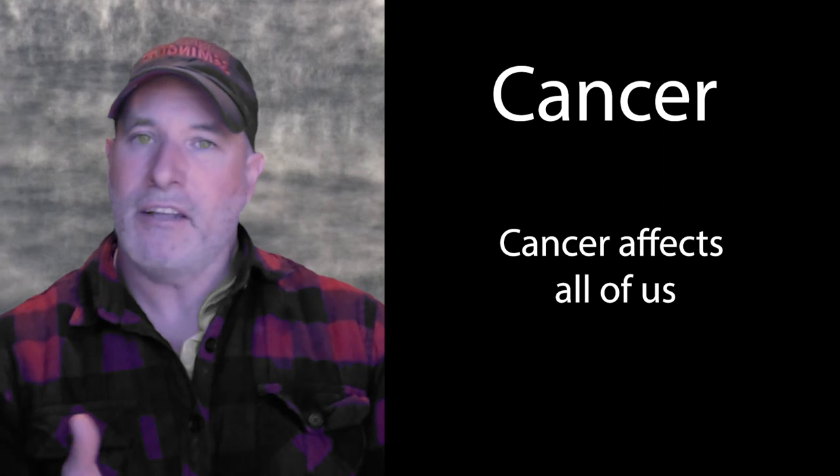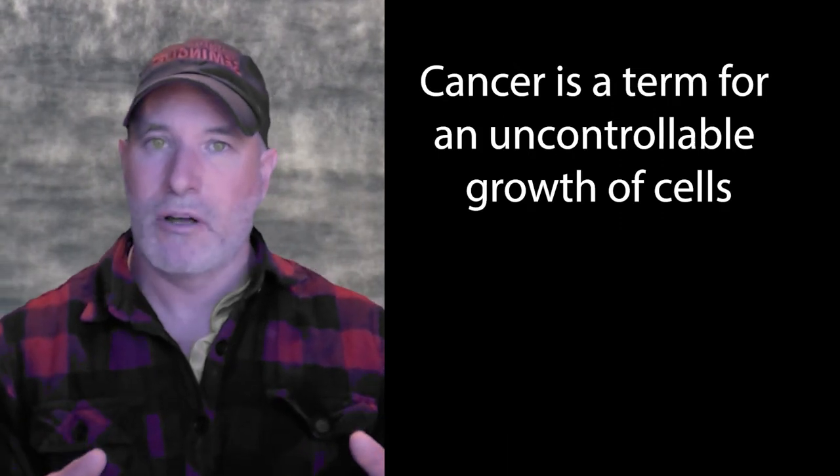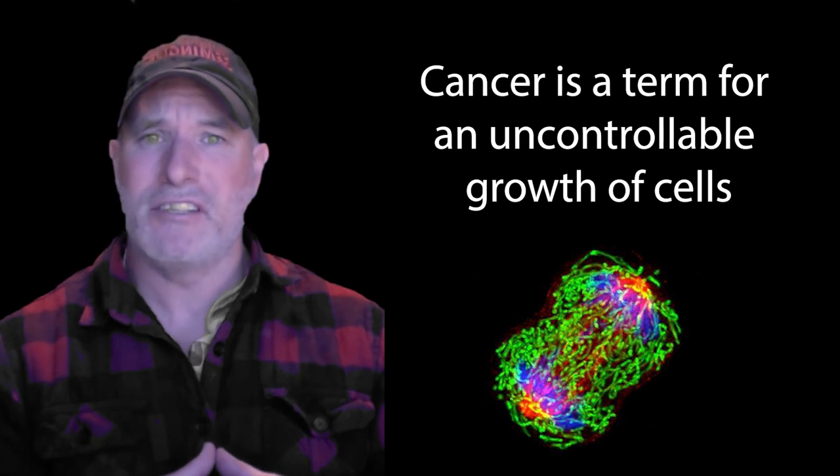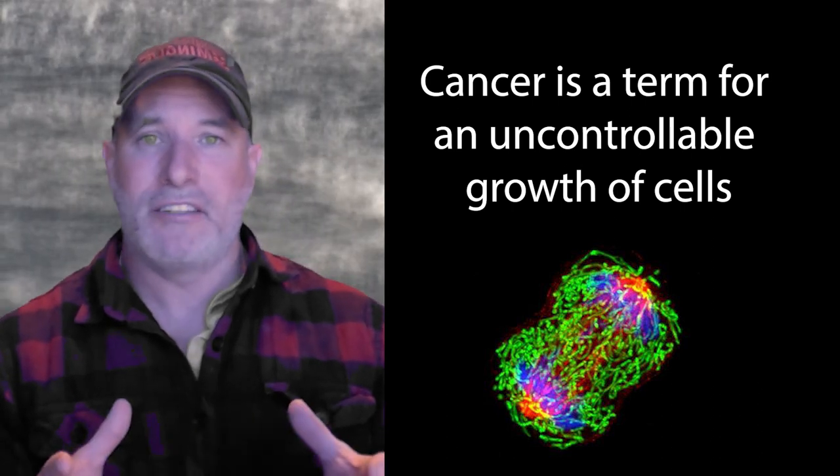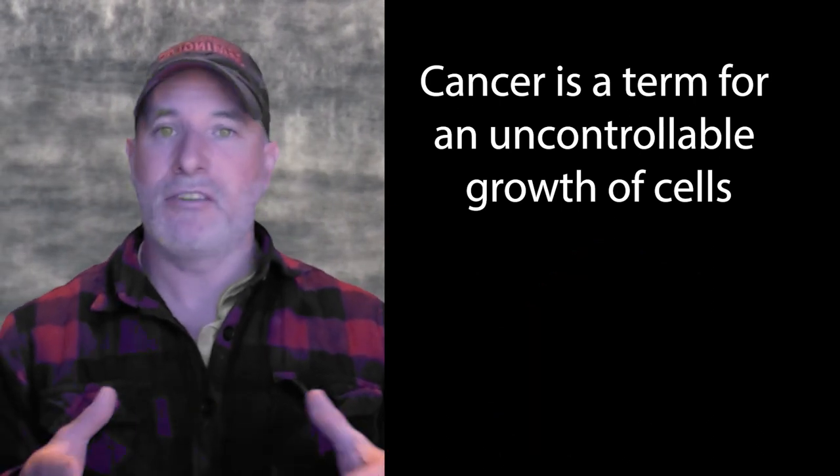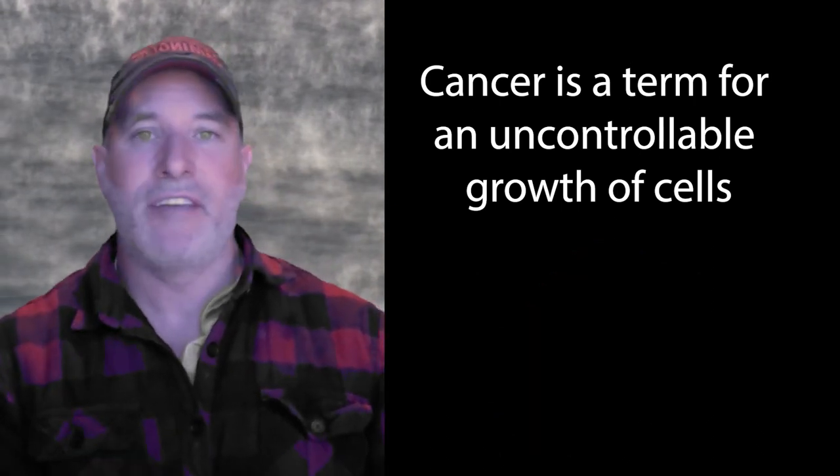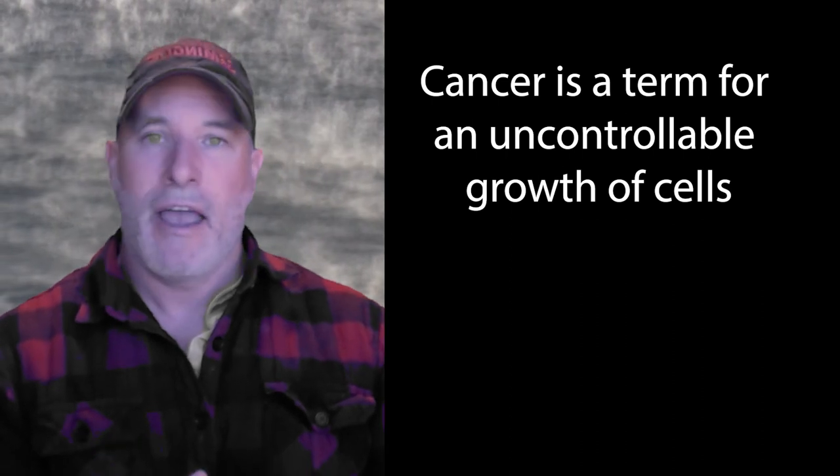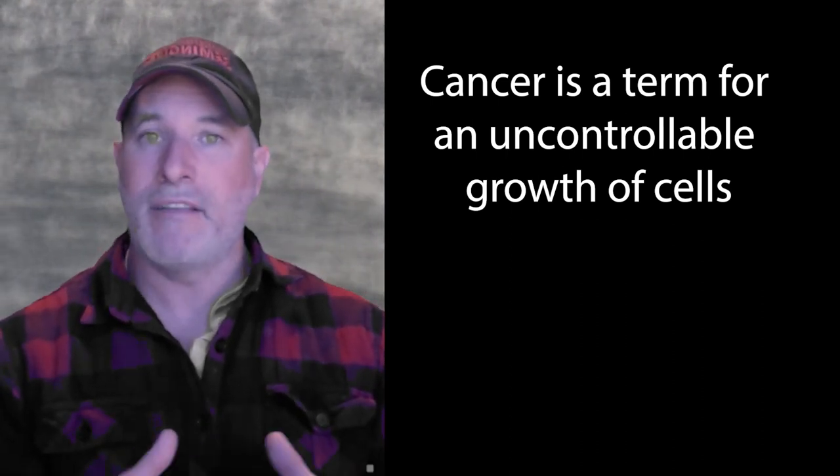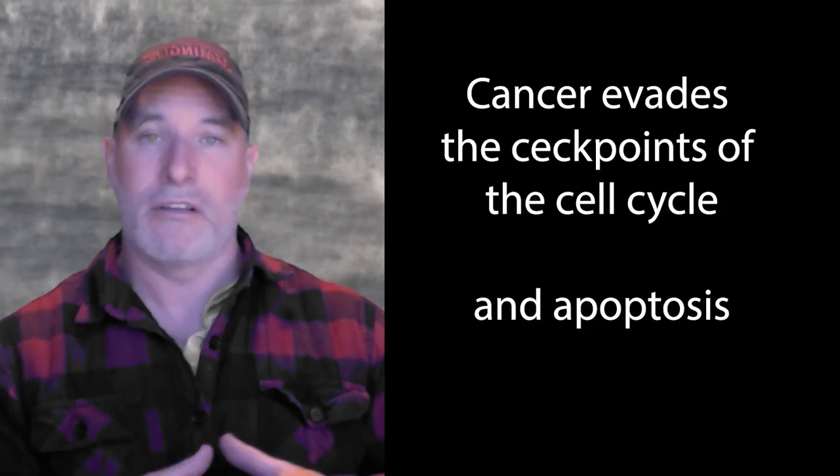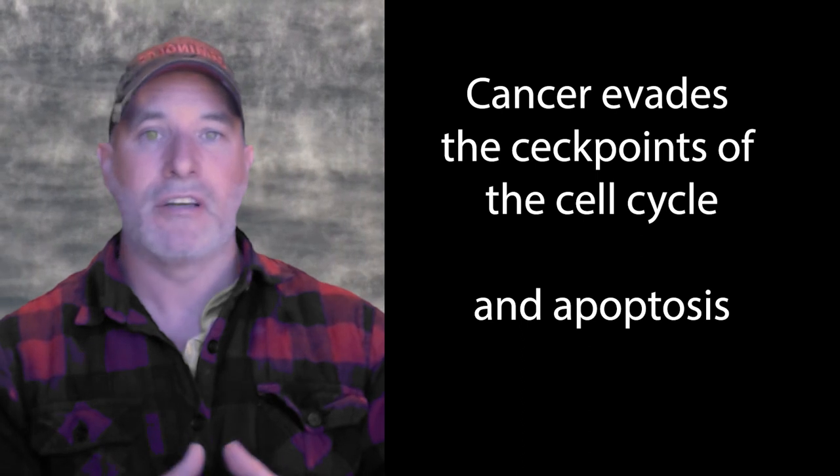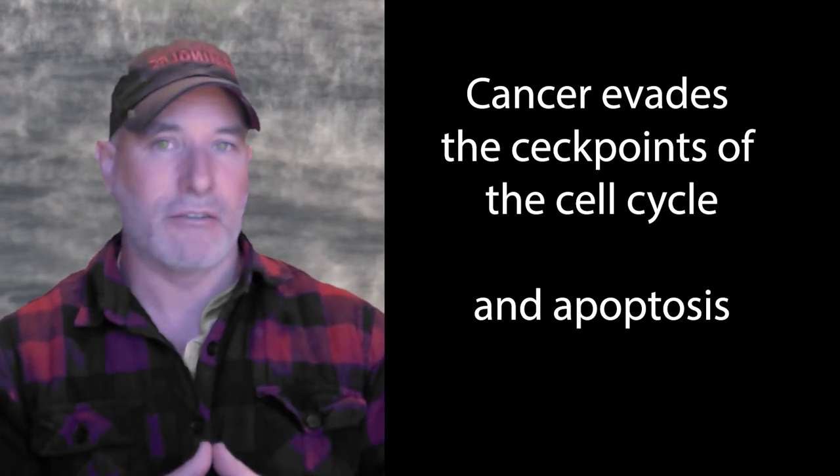First of all, cancer is a catch-all term for about 200 different types of diseases. Almost any tissue type, especially ones that grow and divide all the time, can get cancer. These are our cells that have become damaged through mutations. They have evaded the checkpoints of the cell cycle, and they also evade apoptosis. So in a way, cancer is a failure of apoptosis and a failure of the checkpoints of the cell cycle.